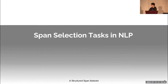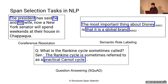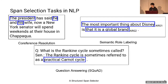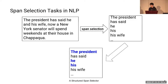I will introduce the concept of a span selection task in natural language processing. Span selection is a family of tasks in NLP. Coreference resolution, semantic role labeling, and question answering are some representative examples. In such tasks, first a set of textual spans are selected, and then some downstream classifications or connections are done upon the selected spans.